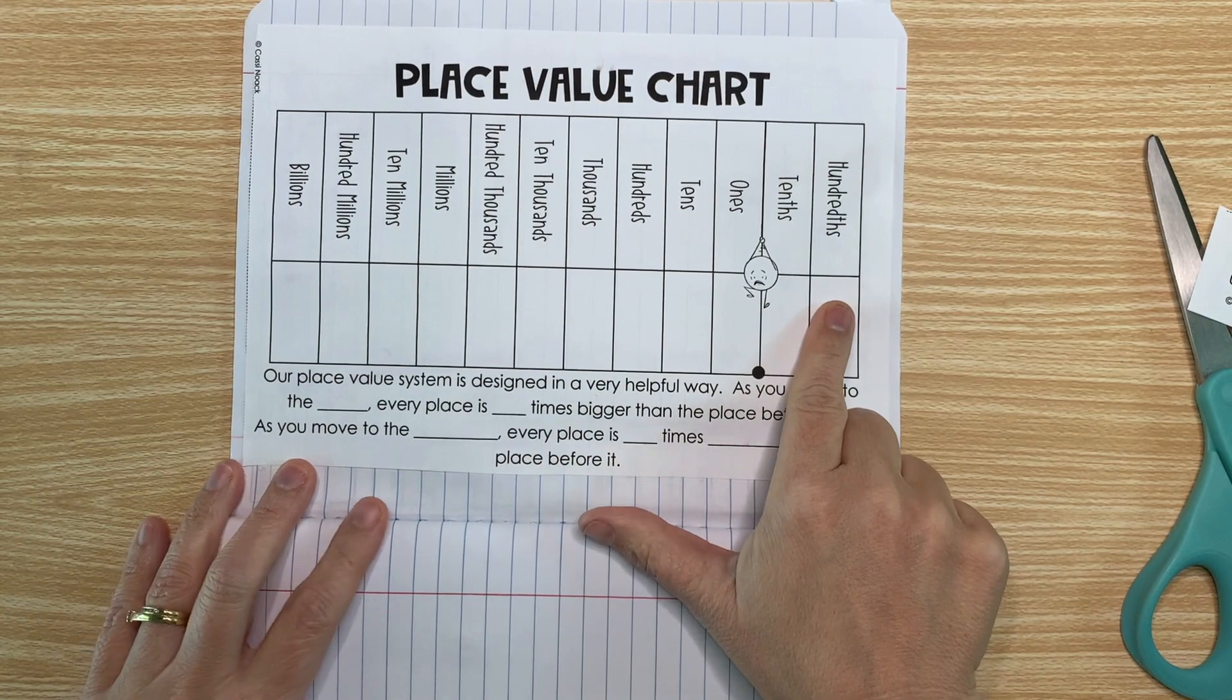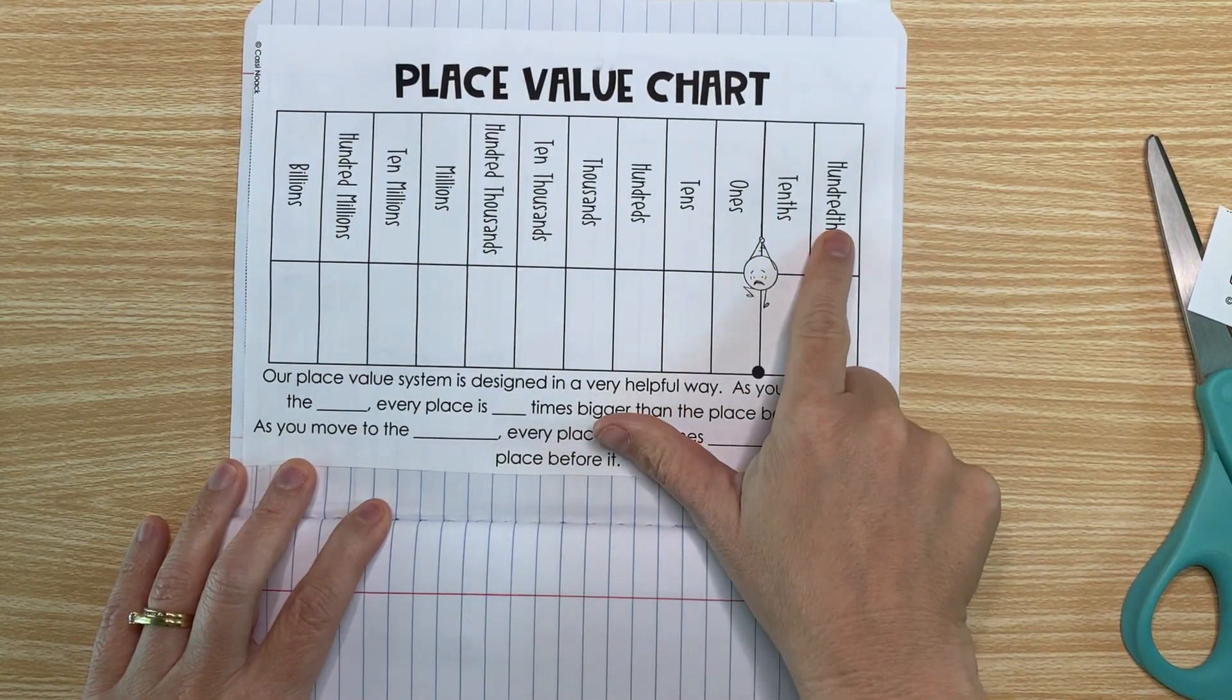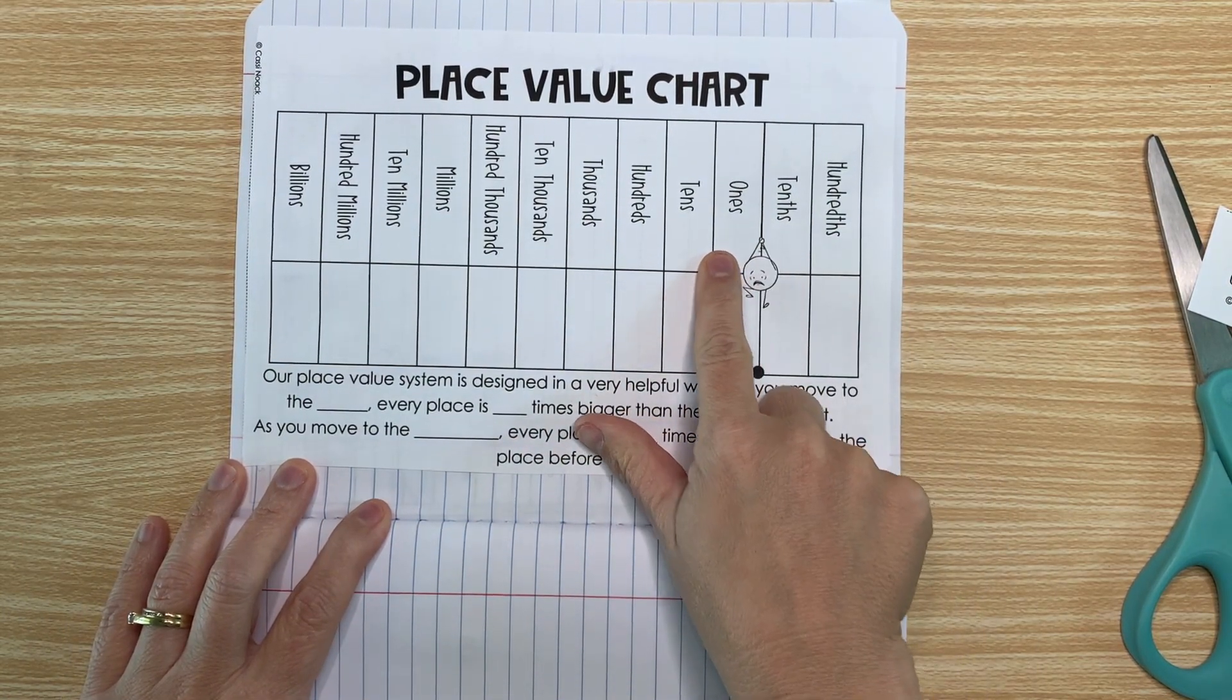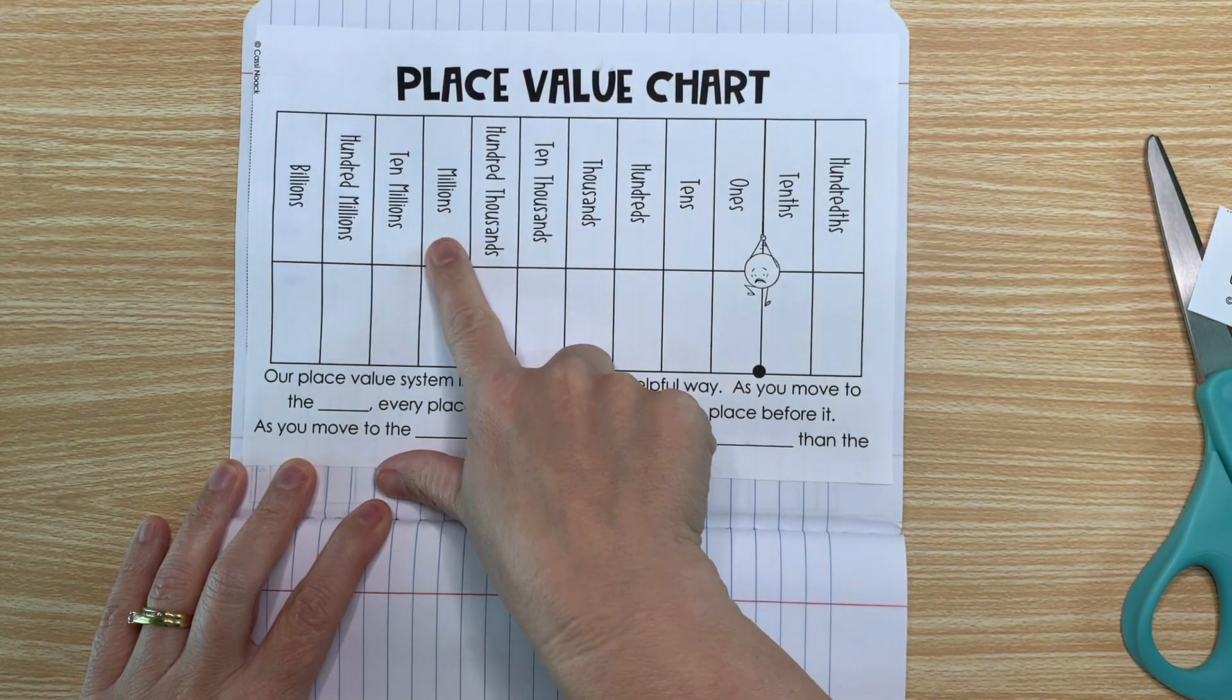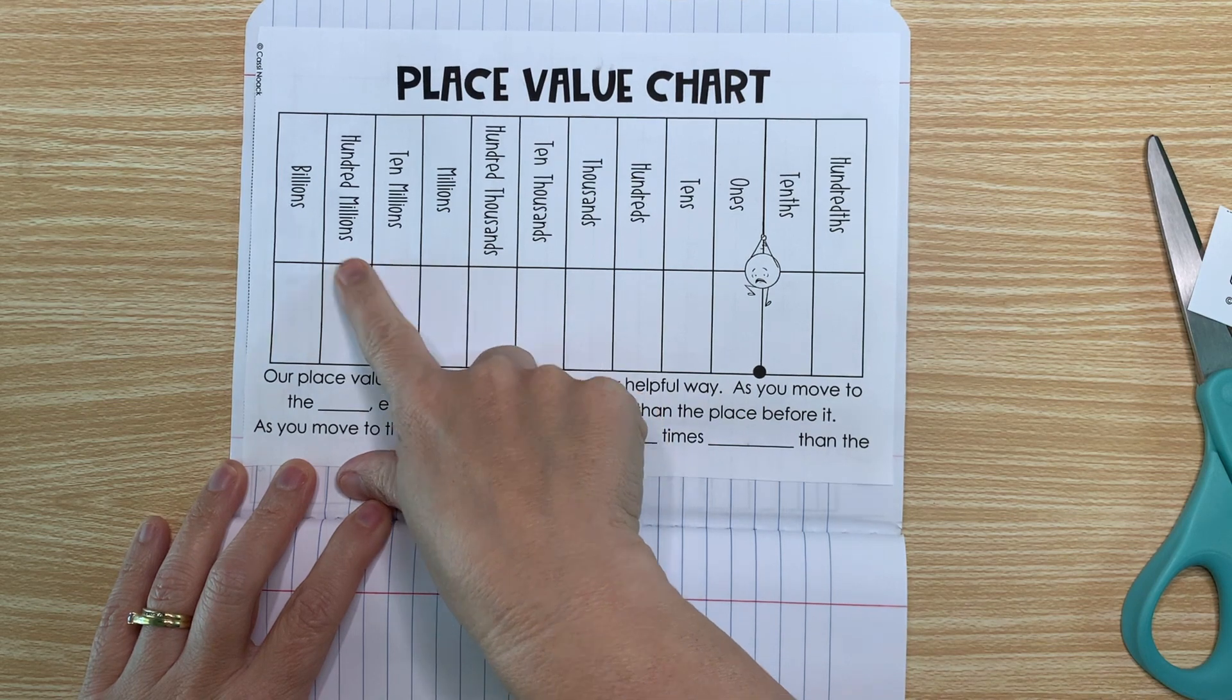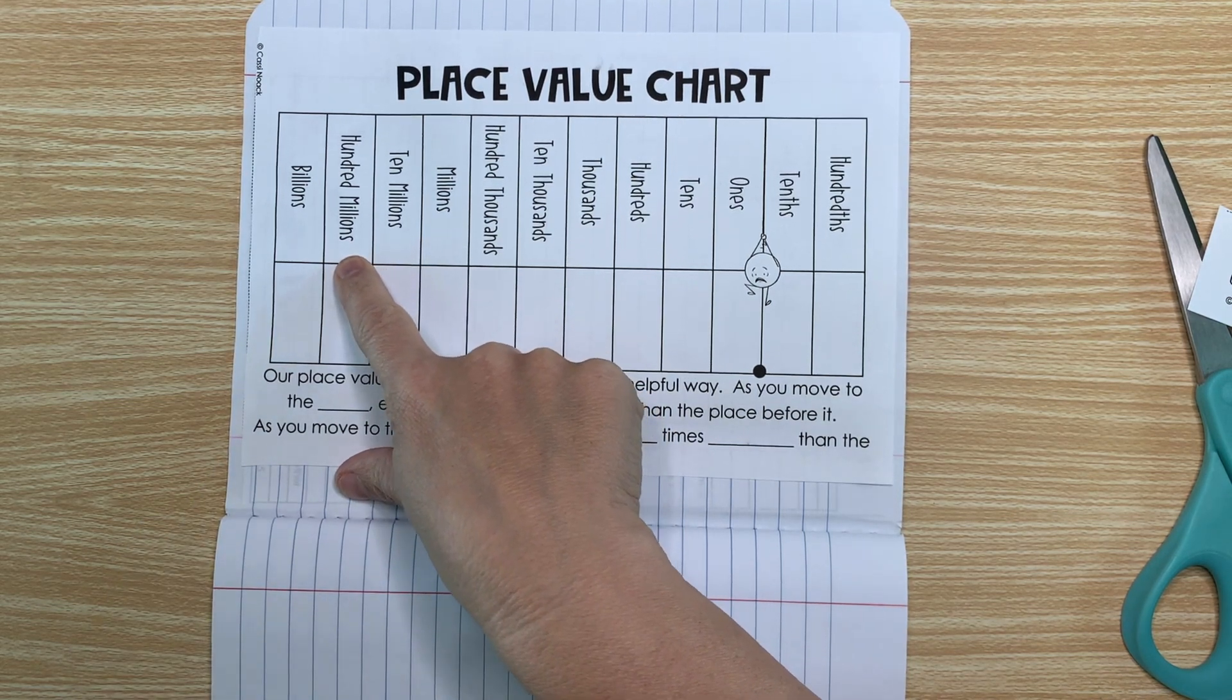So here we have our place value chart. We have hundredths, tenths, ones, tens, hundreds, thousands, ten thousands, hundred thousands, millions, ten millions, hundred millions, and billions.